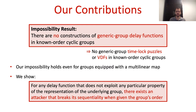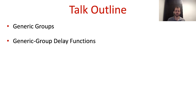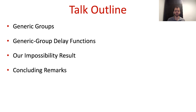What we will show in this talk is that for any generic group delay function — where by generic we mean that it does not exploit in any way the representation of the underlying group — there is an attacker that breaks the sequentiality of this function given the order of the group. The rest of this talk will follow this outline: we will define the generic group model, define delay functions within this model, present a simplified version of our attack, and conclude with closing remarks.